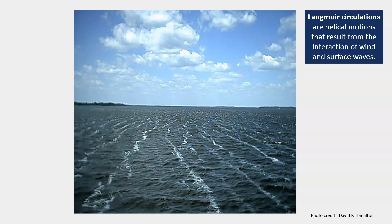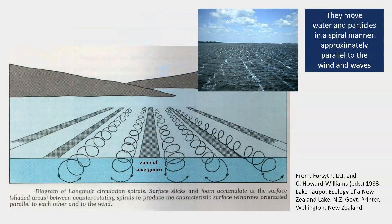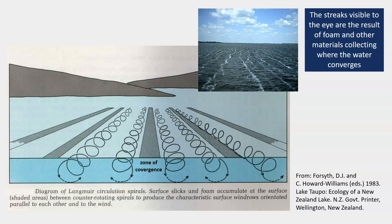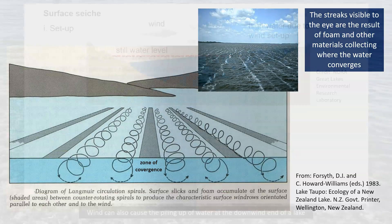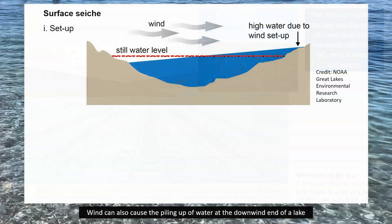Langmuir circulations are helical motions that result from the interaction of wind and surface waves. They move water and particles in a spiral manner, approximately parallel to the wind and the waves. The streaks visible to the eye are the result of foam and other materials collecting where the water converges.